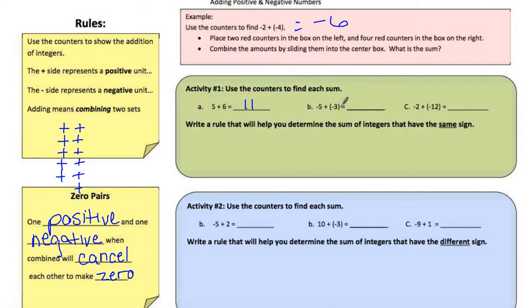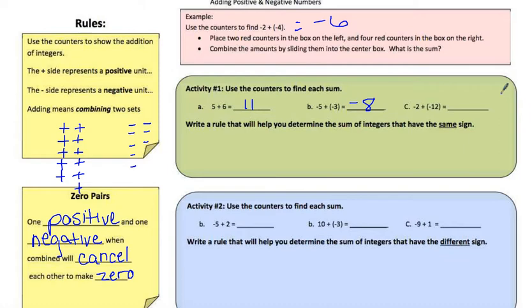Looking at B, you have negative 5 plus negative 3. We draw 5 negatives and 3 negatives and count them up because they have all the same signs: 1, 2, 3, 4, 5, 6, 7, 8 — negative 8. Same thing with letter C: draw 2 negatives for the first one, then 12 negatives for the second one: 1 through 12. Add the 2 to get negative 14.